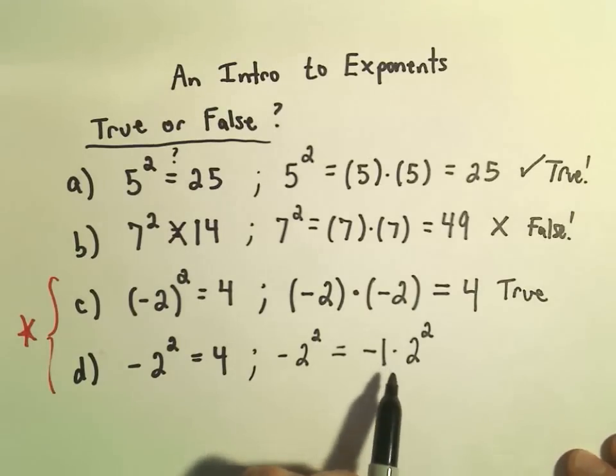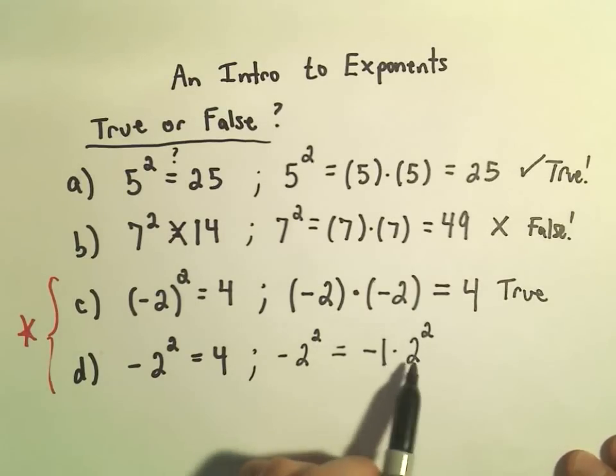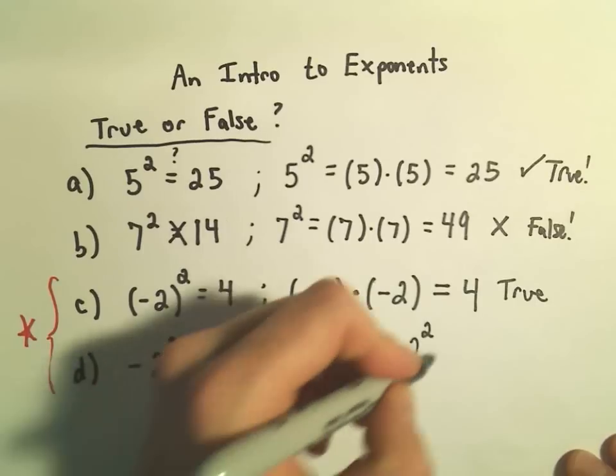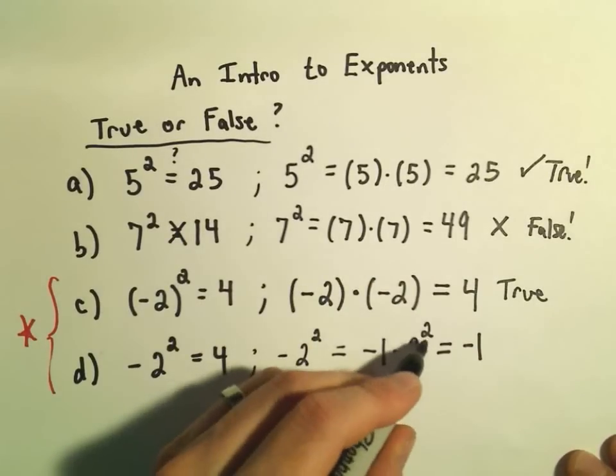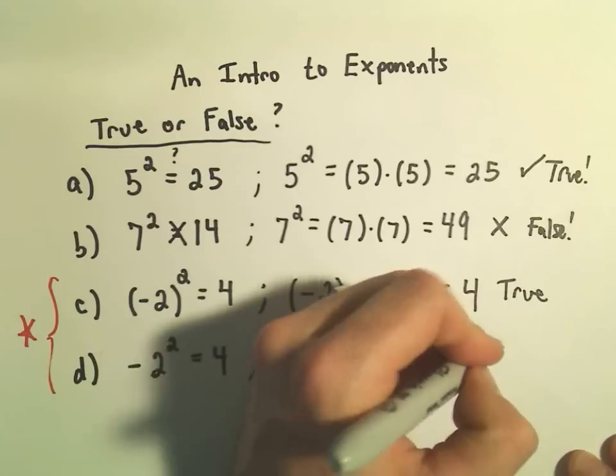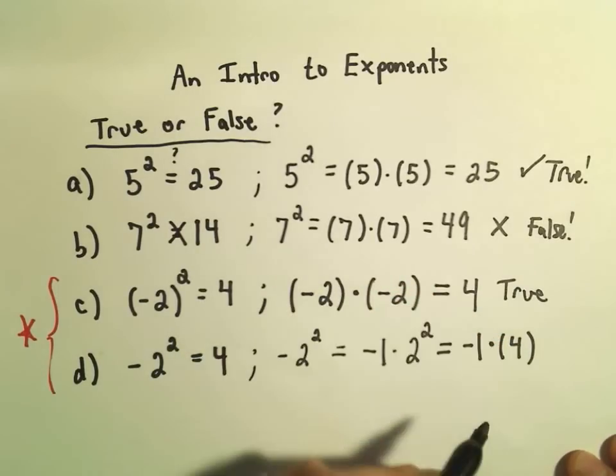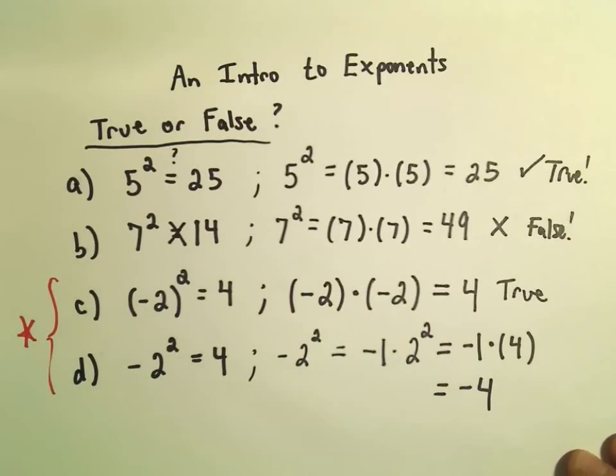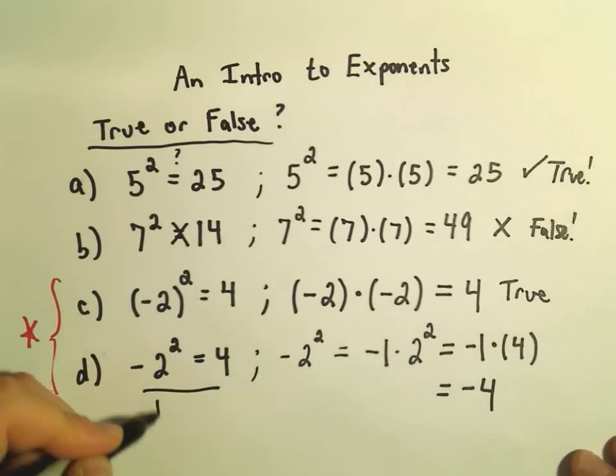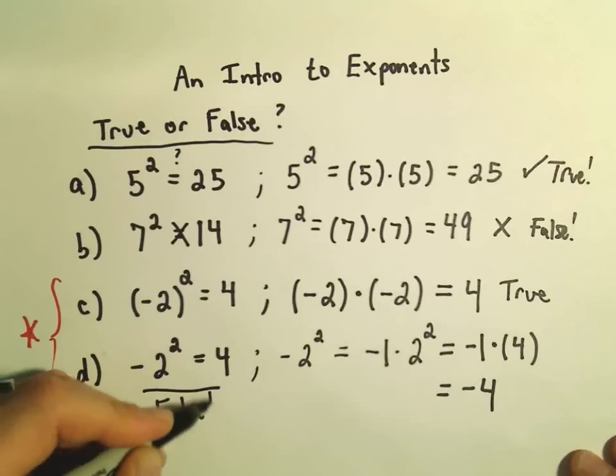In order of operations, we do exponents before we do multiplication. So the negative 1 is just going to be hanging out front, and then we take 2 times 2. 2 times 2 gives us positive 4, but then when we multiply that by the negative 1, we actually end up getting negative 4. So this last statement is, in fact, very false.